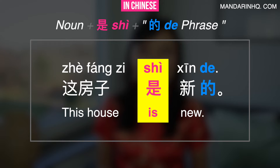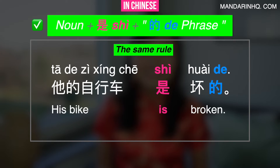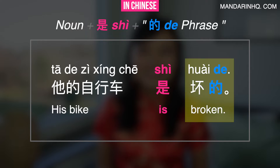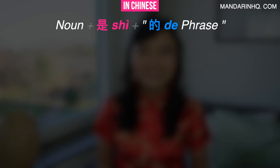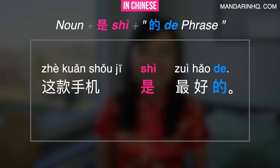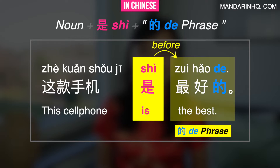这房子是新的. Here's another example: 他的自行车是坏的 — 'His bike is broken.' The same rule applies: 坏的 is a 的-phrase, so we put shì before it: 他的自行车是坏的. One more example: 这款手机是最好的 — 'This cell phone is the best.' 最好的 is a 的-phrase, so shì comes before it.